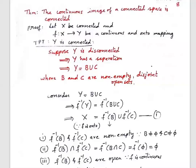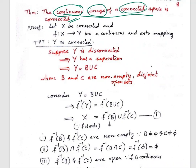Hello, dear students. Today, let us learn one more theorem on connected spaces. The theorem states: a continuous image of a connected space is connected. This is a very important result — it is specifically the continuous image of a connected topological space that is connected.